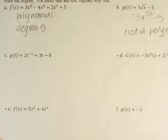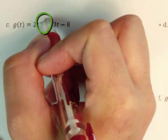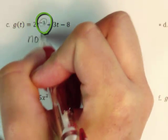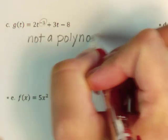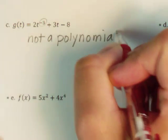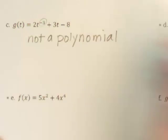Looking at letter C, because of this, this is not a polynomial. Again, remember polynomials had to have non-negative integer exponents. This is a negative exponent.